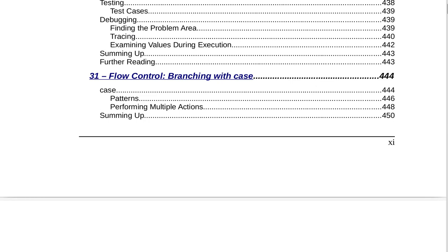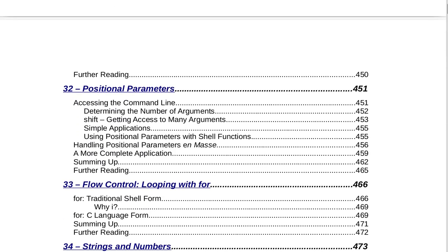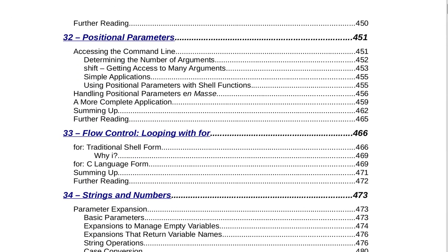Section 31 is Flow Control: Branching with Case on page 444. That includes case, patterns, and performing multiple actions. Summing up and further reading on page 450. Section 32 is Positional Parameters on page 451, covering accessing the command line, determining the number of arguments, shift to get access to many arguments, simple applications, using positional parameters with shell functions, handling positional parameters en masse, a more complete application, summing up, and further reading on page 465.